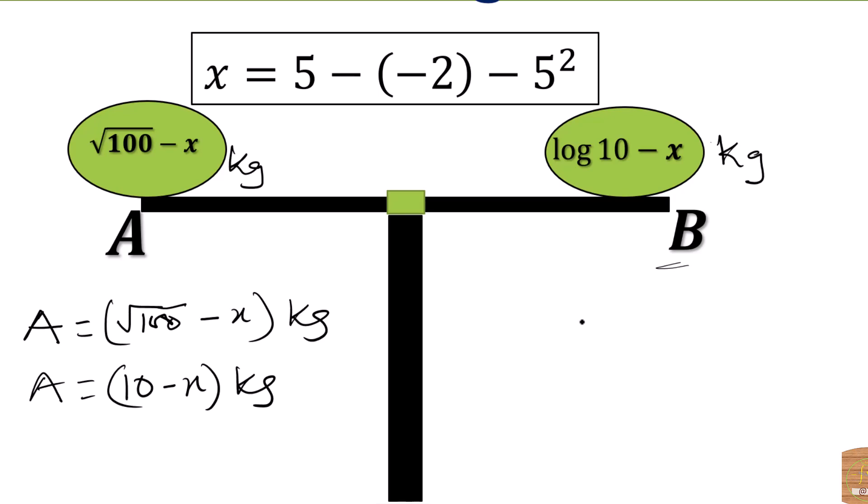Then the right-hand side has to do with log 10 minus X. And log 10 is 1. So we have B to be 1 minus X in kilograms.